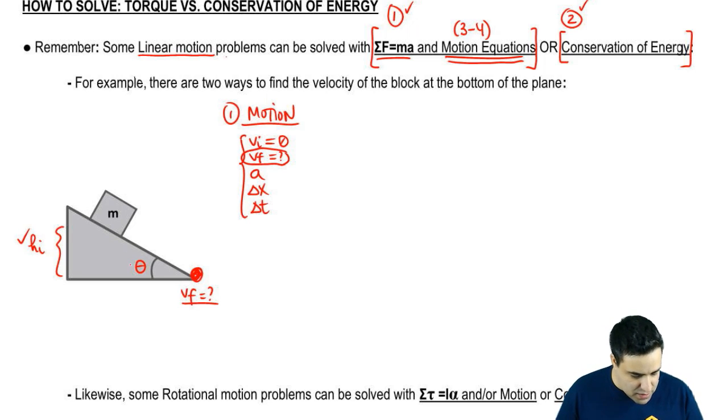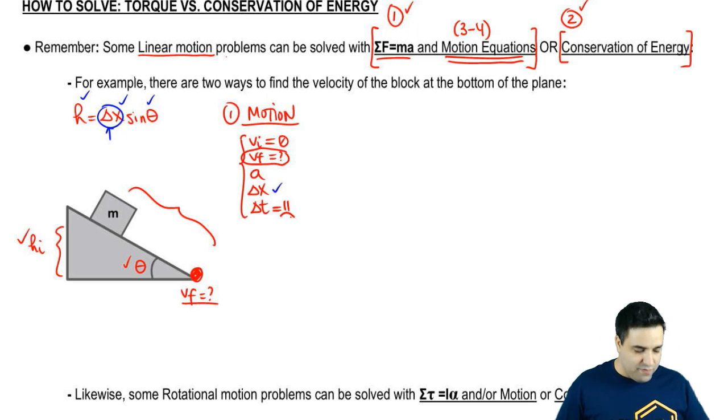So from these, you would be able to find your delta x, right? Because h equals delta x sine of theta. So if I give you these two, you can find this one. Okay? So you would have some delta x as well. You wouldn't have delta t. That would be your ignored variable.